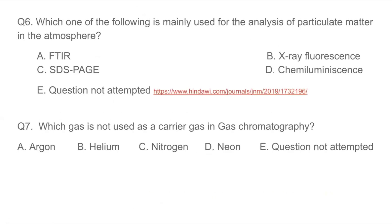Question 6: Which one of the following is mainly used for the analysis of particulate matter in the atmosphere? FTIR stands for Fourier Transform Infrared Spectrometer — not correct. SDS-PAGE is used in proteomics for biological samples such as proteins. Chemiluminescence is used in the analysis of NOx. X-ray fluorescence is used for particulate matter analysis. From Environmental Chemistry by Anil Kumar Day, page 307: 'X-ray fluorescence is a multi-element analysis technique particularly useful for the analysis of atmospheric particulate matter.'